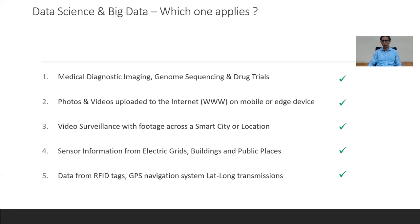Sensor information from electric grids — what are called smart grids — keeps feeding data pretty much every minute. The data runs into terabytes and even petabytes. The Large Hadron Collider in Switzerland is probably streaming 15 petabytes of data a year. We're really talking big numbers.